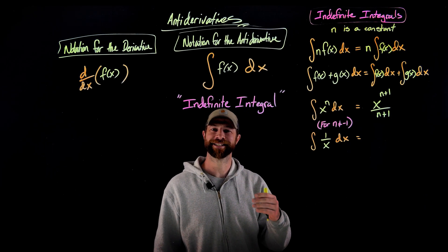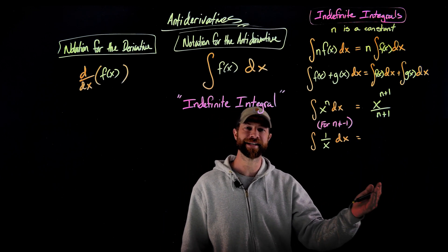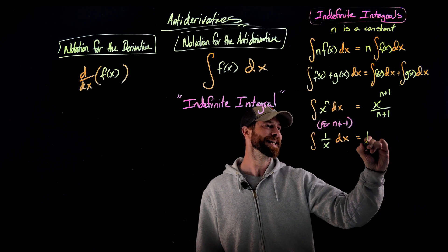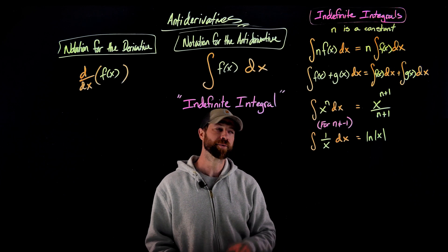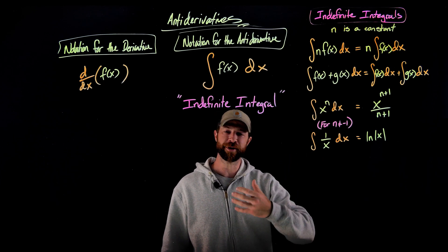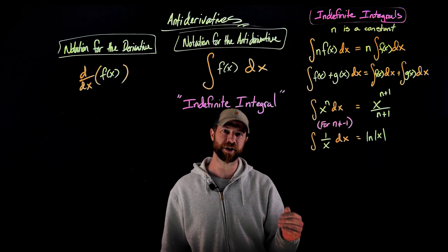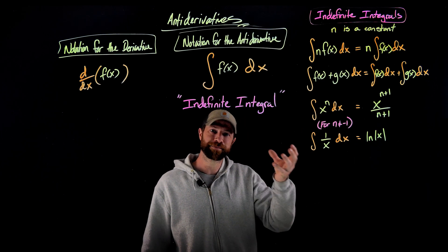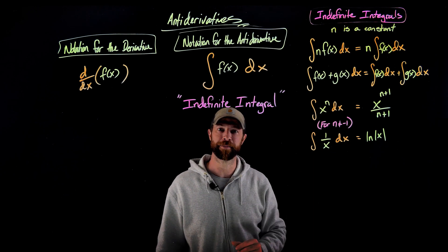So here we have a case of x to the negative one. In this case right here, again we're thinking, what would we differentiate to get one over x? If you remember, it's the natural log. In this case, it is very important now to use absolute values. And the reasoning here especially is because one over x, if we don't restrict the domain, negative and positive values are allowed. The only issue is at zero. And natural log naturally only takes in positive values. So we need to use the absolute value to keep these domains the same.